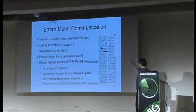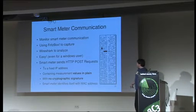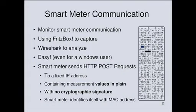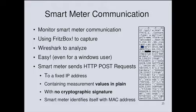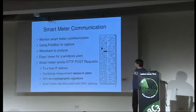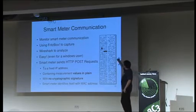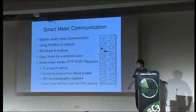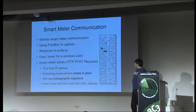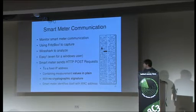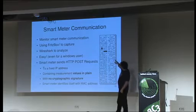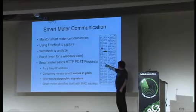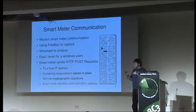What about the smart meter communication? I'm a Windows guy, so network tools were new to me. I started monitoring with a switch and some ARP flooding on Windows — really difficult. Then I found an interface in the Fritz box that can capture data, and used Wireshark to analyze — pretty easy even for a Windows user. I found that the smart meter sends HTTP POST requests to a fixed IP, containing measurement values in plain text — you can see kilowatt hours, seconds — with no encryption or signature.